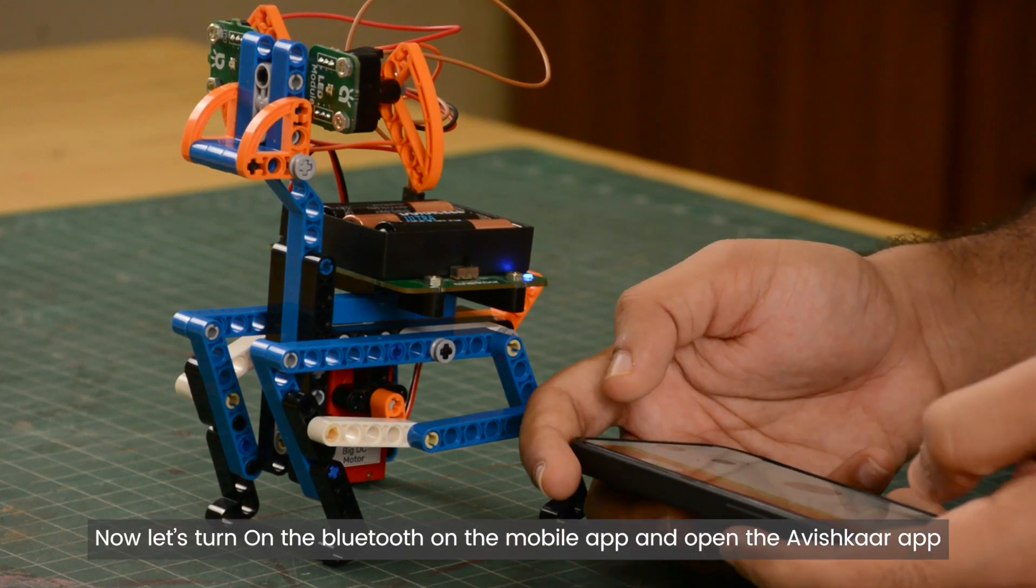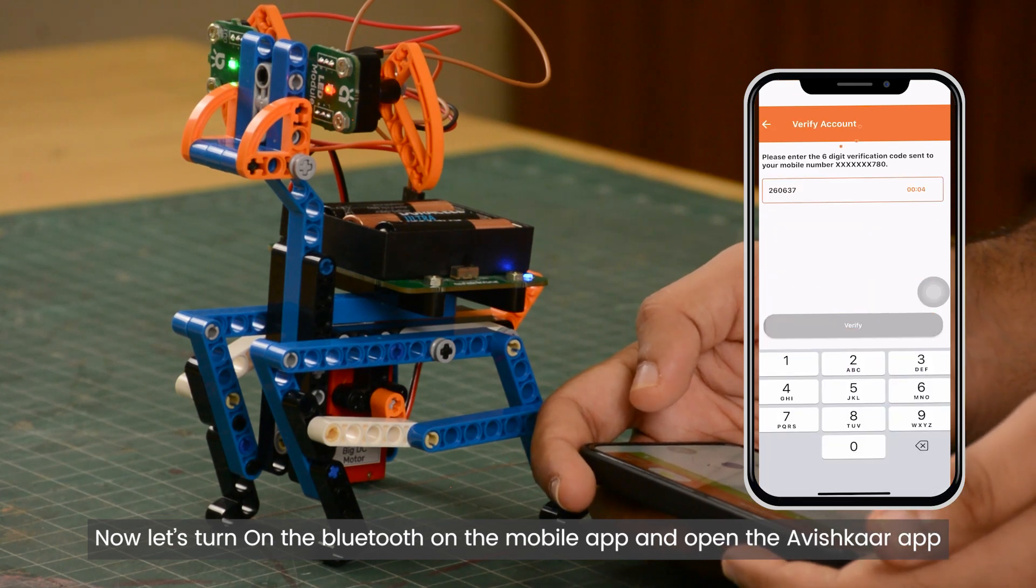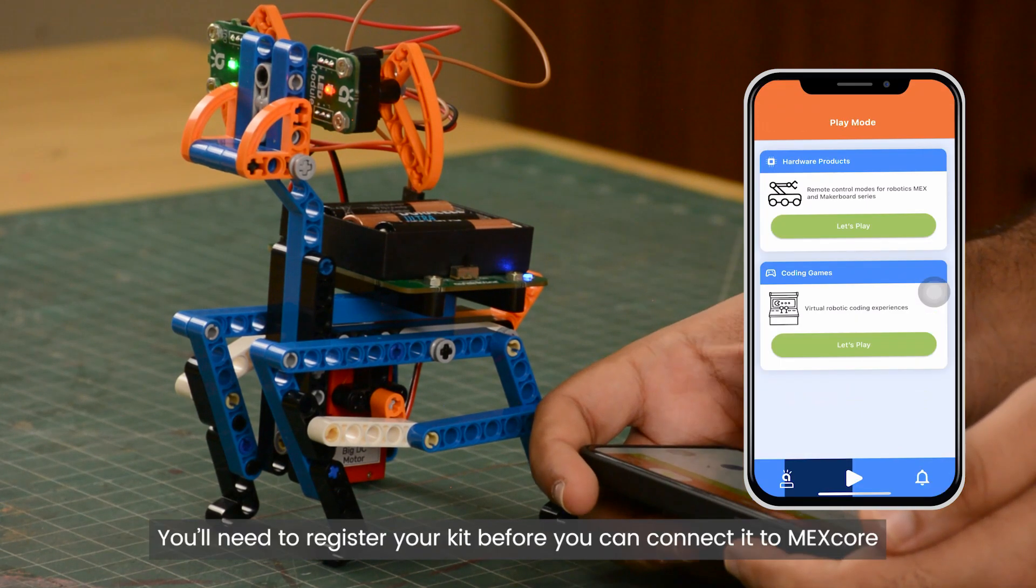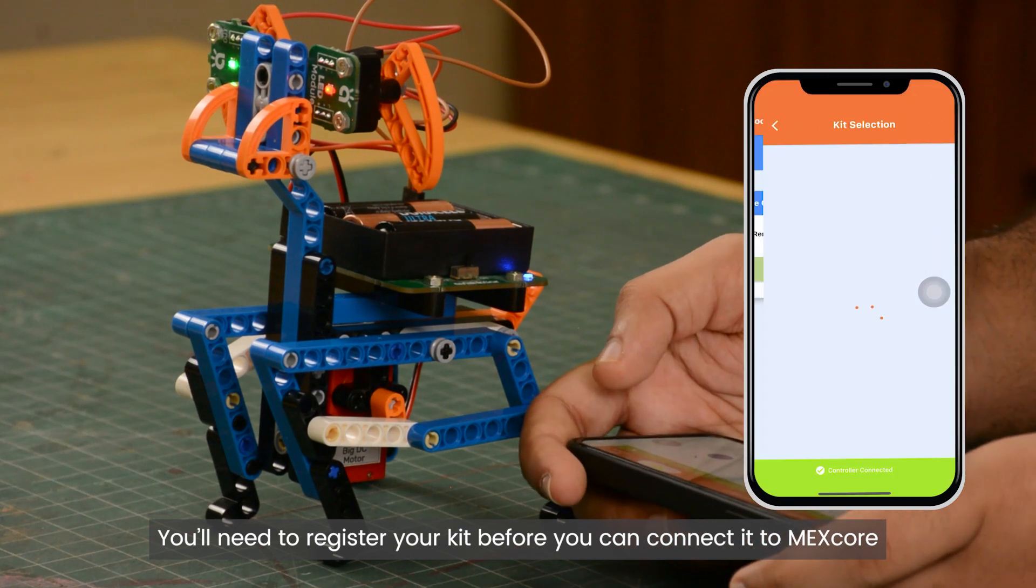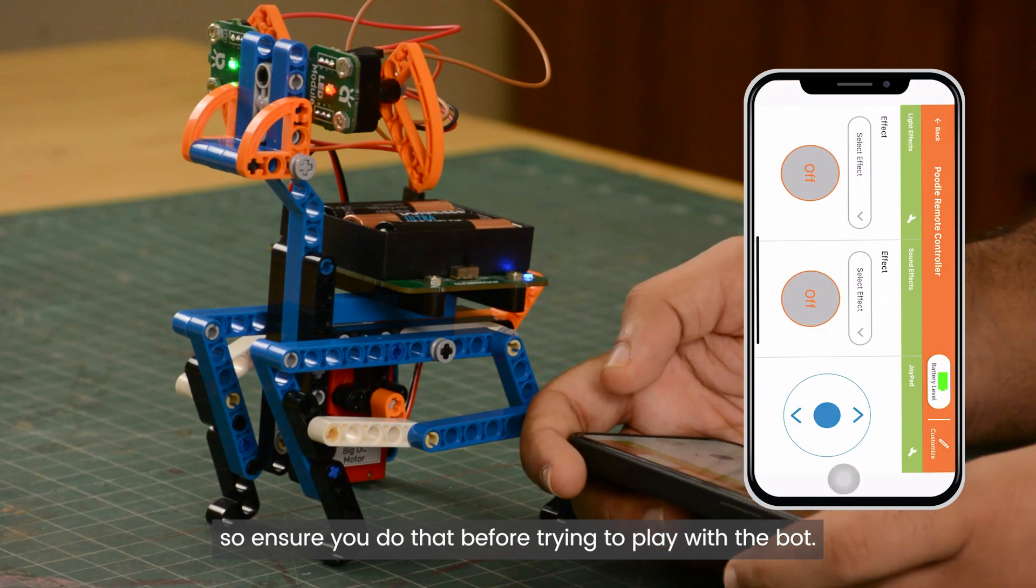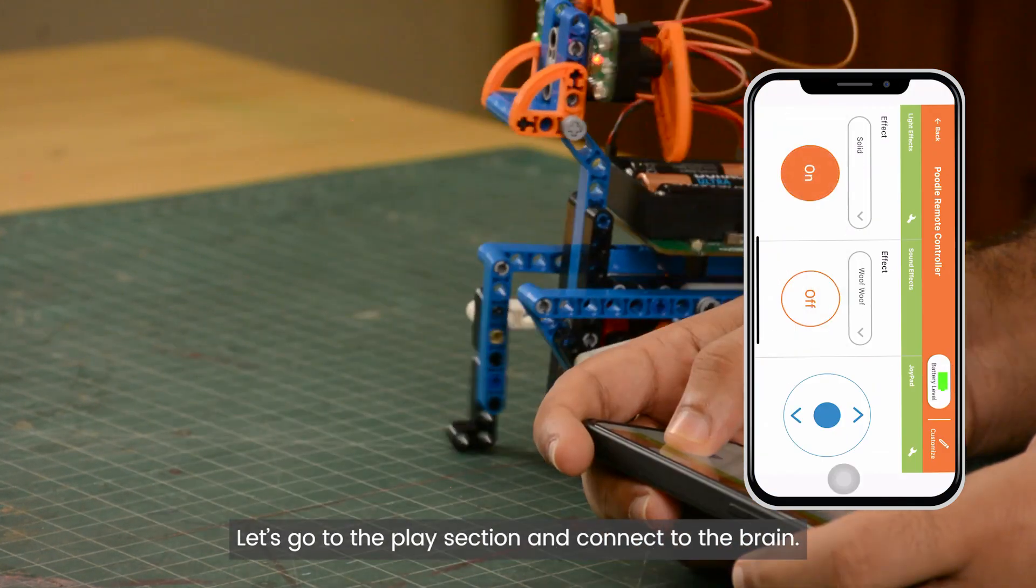Now let's turn on the Bluetooth on the mobile app and open the Avishkar app and make an account. You'll need to register your kit before you can connect it to MEXcore. So ensure you do that before trying to play with the bot. Let's go to the play section and connect to the brain.